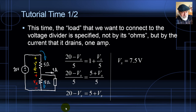By the way, the equivalent resistance of the device connected is Rx = Vx / I = 7.5 V / 1 A = 7.5 ohms.